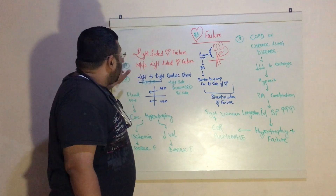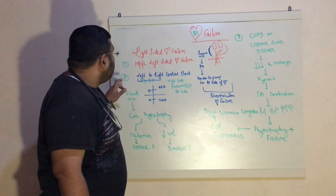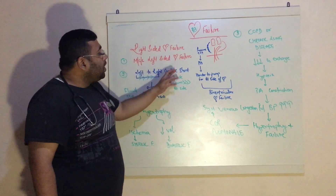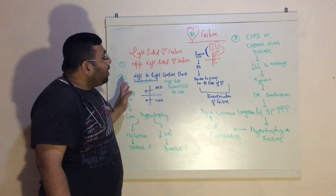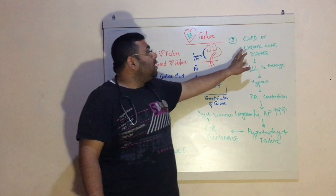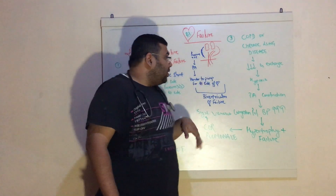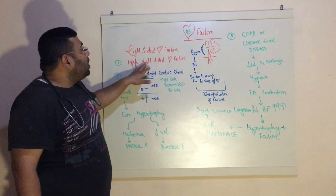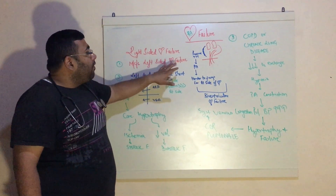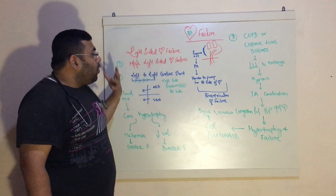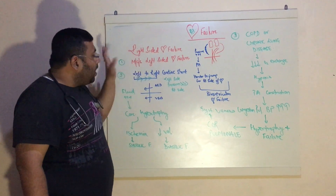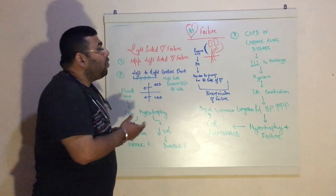The next reason is left-to-right cardiac shunt, and the third reason is chronic lung disease. So first we have the most common cause: left-sided heart failure, which we have already discussed, but I will try to explain it again.